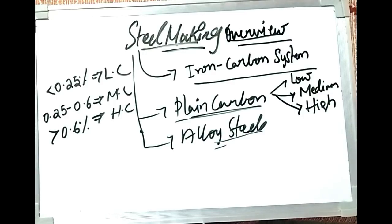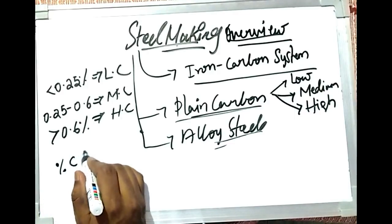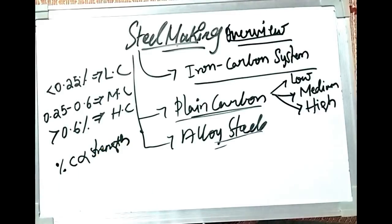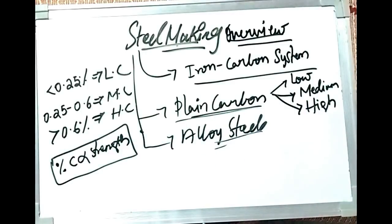Low carbon steels have excellent ductility and toughness, whereas while increasing the carbon content the steel becomes hardest, strongest, and least ductile. Always remember: the percentage of carbon is directly proportional to the strength and hardness of the steel, and inversely proportional to the ductility.